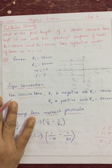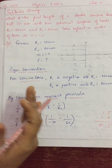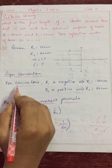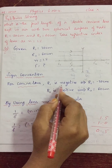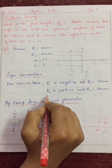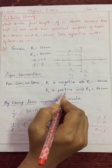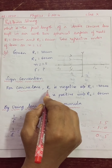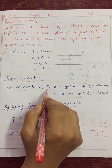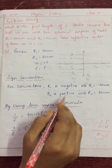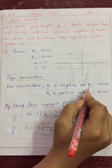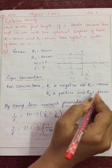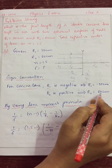Before solving, we need to apply the sign convention. For a concave lens, R1 is negative and R2 is positive — always remember this for concave lens. So R1 = -30 cm and R2 = +60 cm.